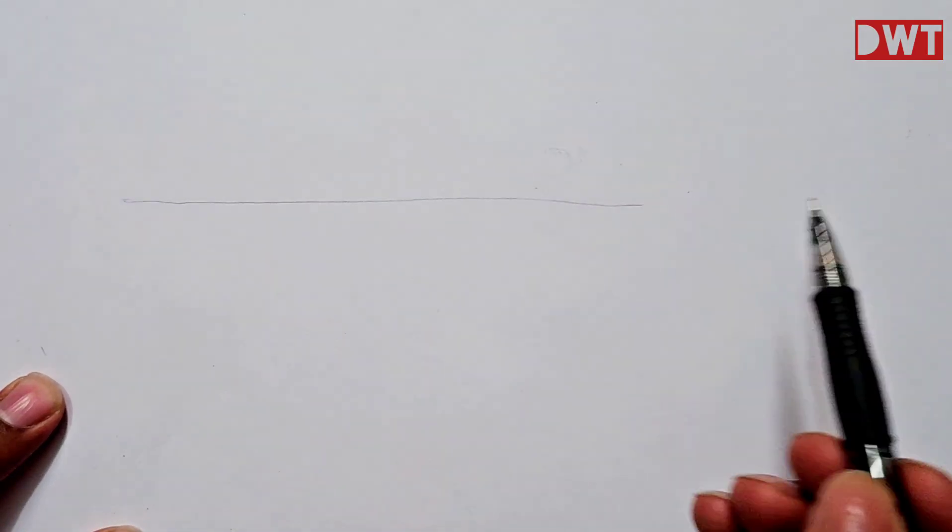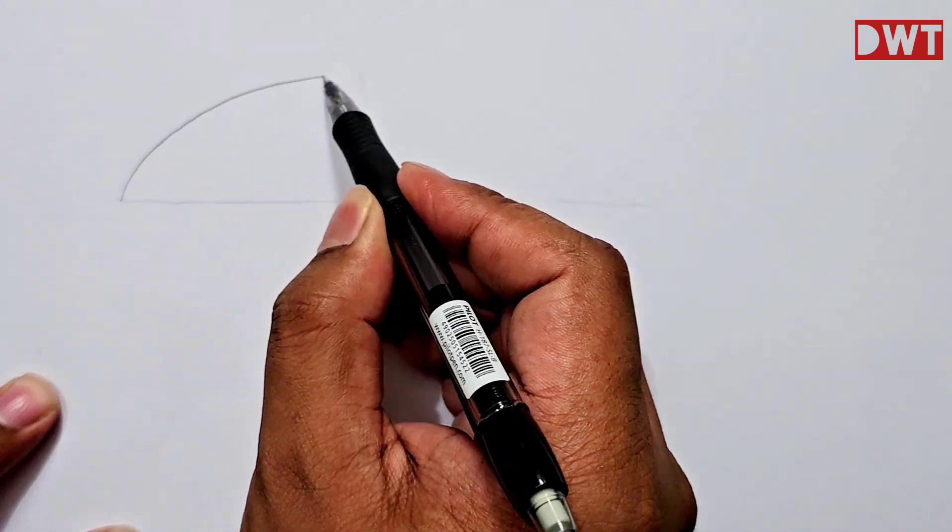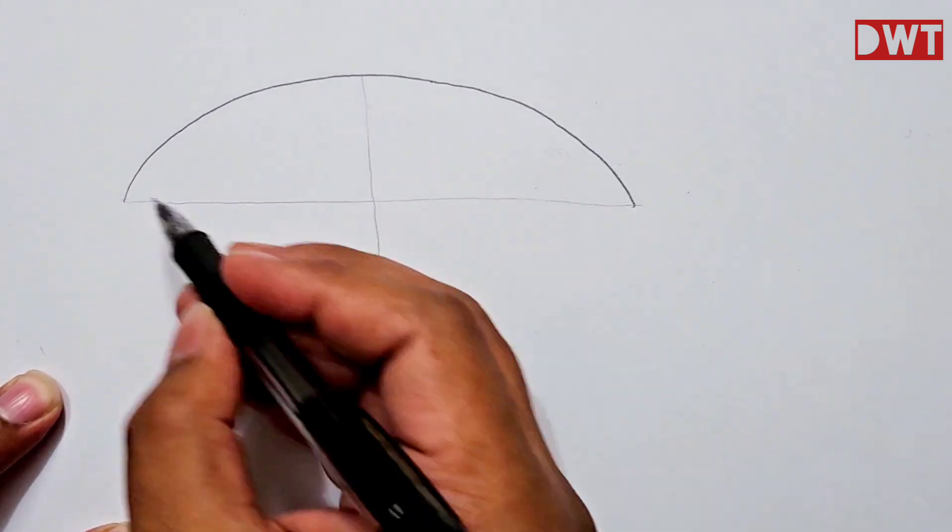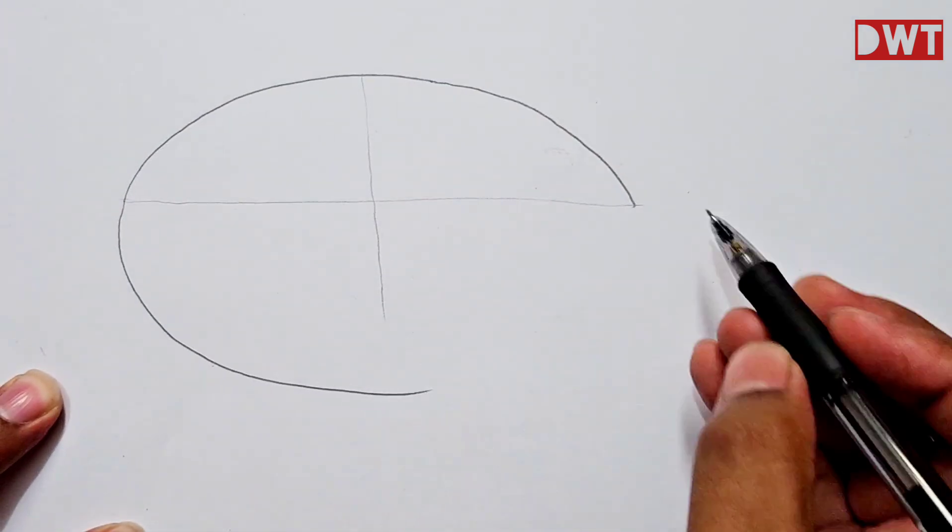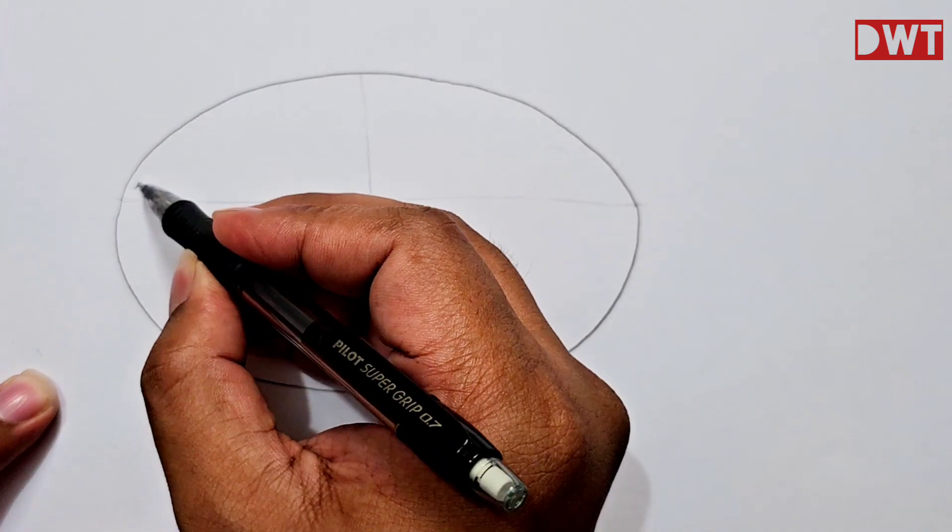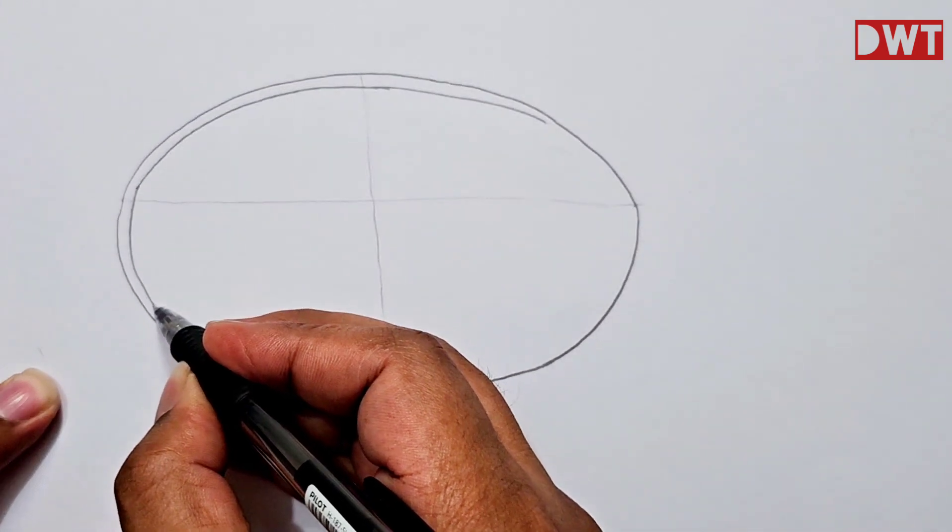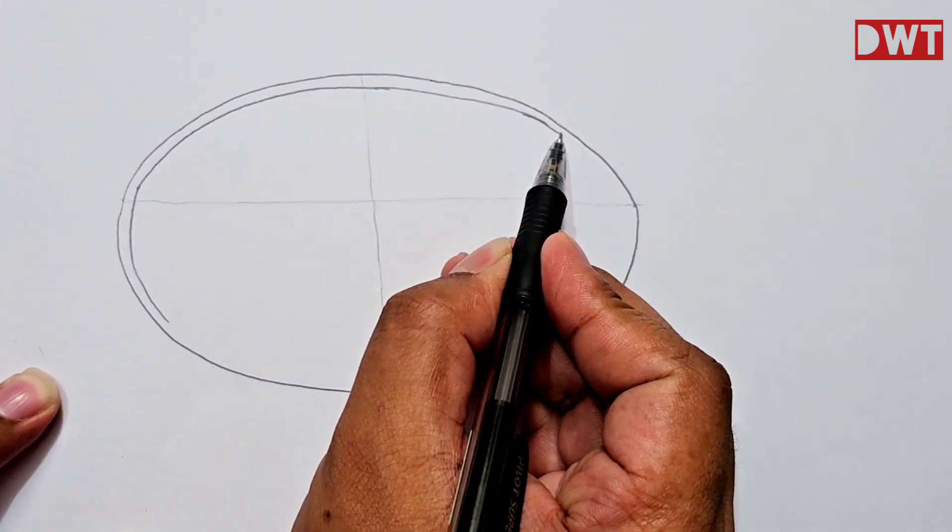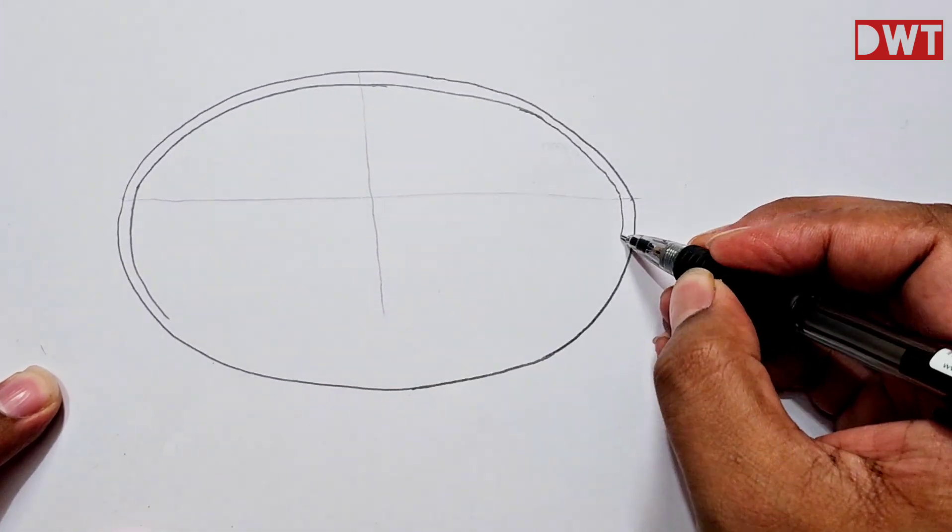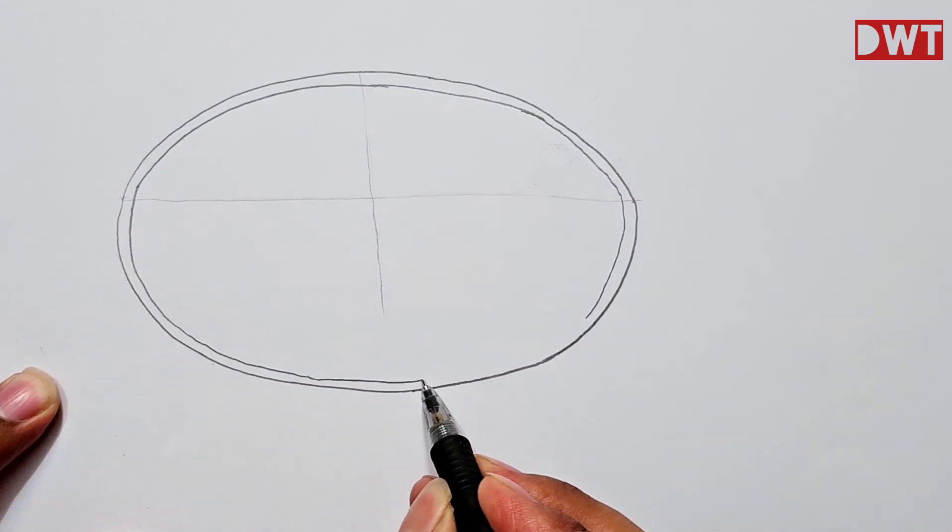Dear friends, today I am going to draw the structure of chloroplast, also known as plastid. Chloroplast is an important organ in plants and it conducts photosynthesis process in plants. First we have to draw a structure.